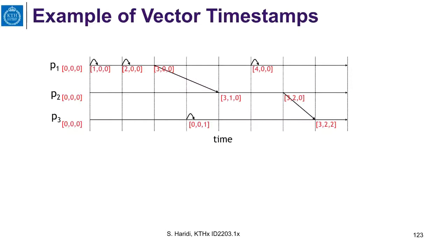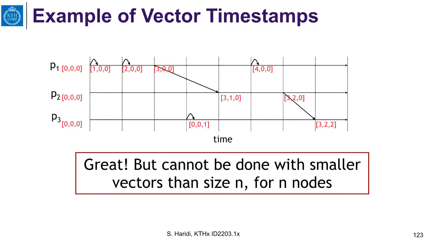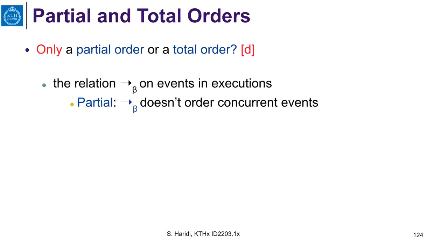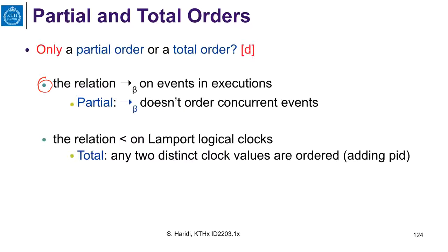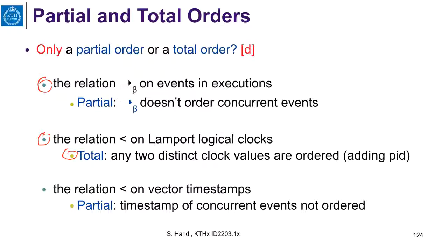One result to be aware of is that we cannot use vectors with smaller size than n in general — there are some executions that require the vector size to be equal to n. Regarding partial and total order: the happen-before relation is a partial order because you cannot order concurrent events. Lamport clocks are a total order because any two distinct clock values are ordered. The vector timestamp is a partial order because some vectors are incomparable, and those are the ones that capture concurrent events.